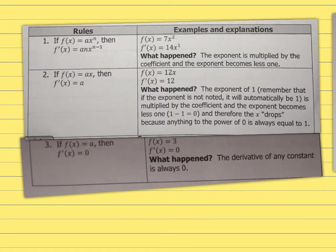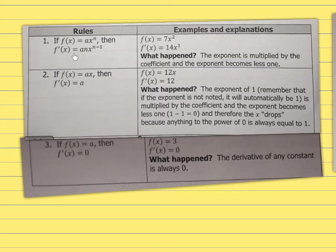Now let's look at the rules. Your first rule says: if f(x) equals a times x to the power n, where x is any variable and n is the exponent, then f'(x) equals a times n times x to the power n minus 1. What happens? The exponent is multiplied by the coefficient, and the exponent becomes one less.